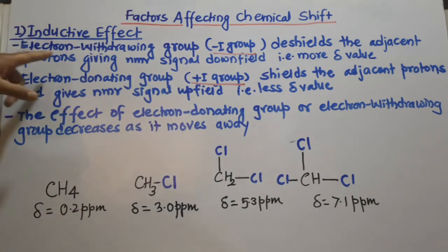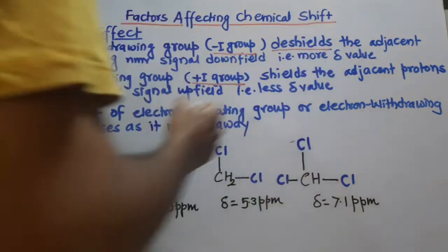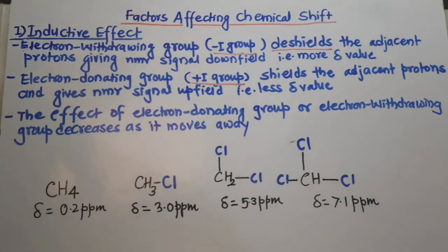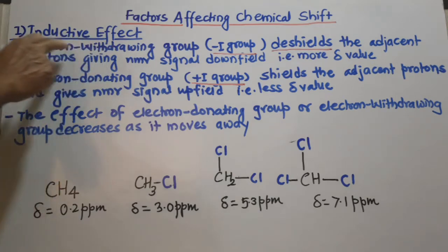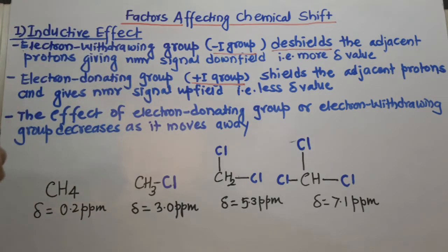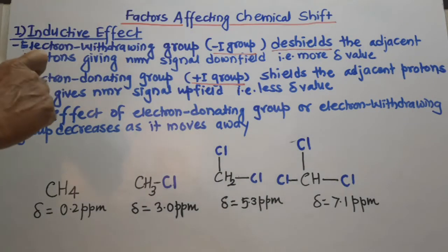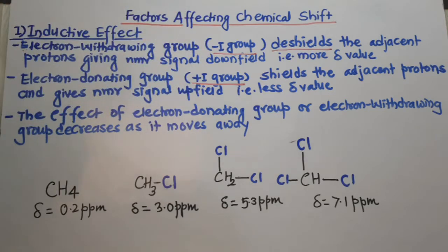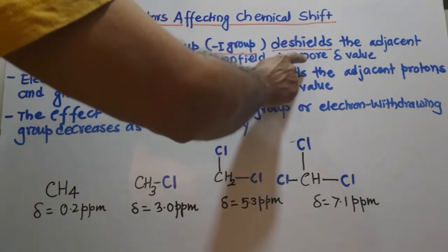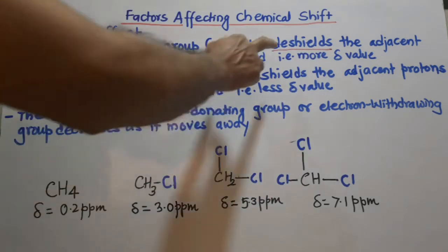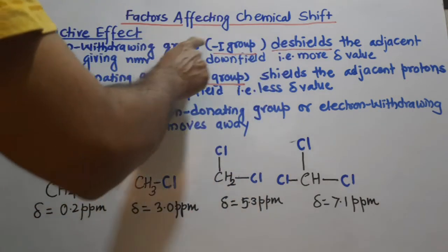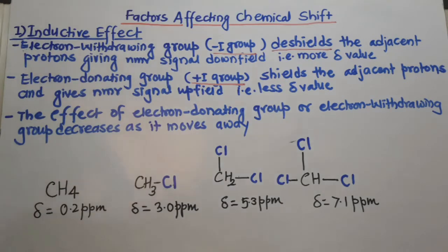Electron-withdrawing groups deshield the adjacent proton. Deshielding means making that proton more exposed to the applied magnetic field. So if an electron-withdrawing group is present in the molecule, the adjacent proton — where that group is attached — is deshielded. Deshielded means its NMR signal shifts towards downfield, away from TMS (tetramethylsilane). Such a proton will show the NMR signal at a higher delta value because of this deshielding caused by the minus-I group.